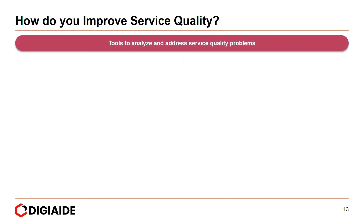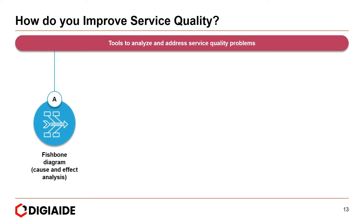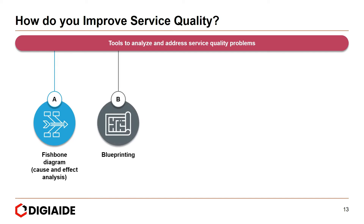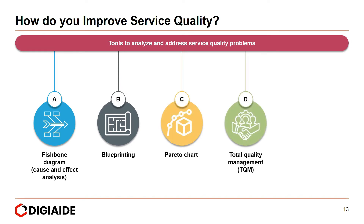The tools to analyze and address service quality problems include: first, the fishbone diagram, also known as cause and effect analysis; then blueprinting, covered in the service sector module under the chapter of process; number three is a Pareto chart; then total quality management; and finally, Six Sigma.